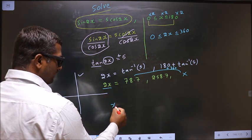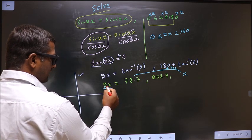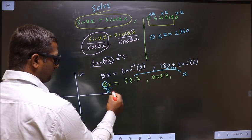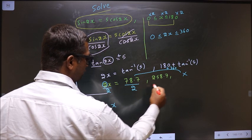Now, to get the values for x, this 2 should be removed. For that, you divide by 2 throughout.